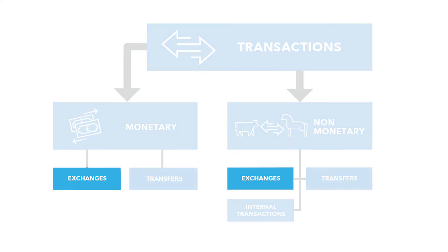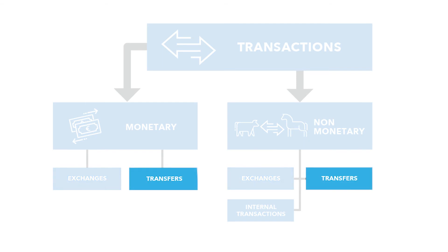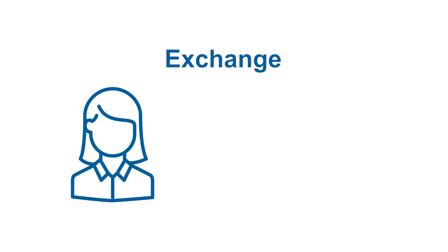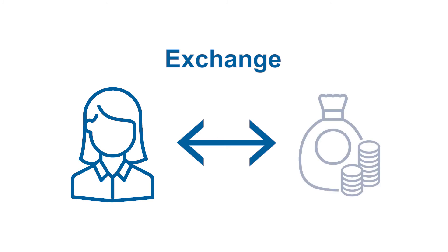Both monetary and non-monetary transactions can be exchanges or transfers. Put simply, exchanges are something for something, or requited, and transfers are something for nothing, or unrequited. In addition, transfers can also arise when the value provided in return for an item is not economically significant or is much below the value. An example of an exchange is where an employee provides their labor to an employer in exchange for an asset — their salary.